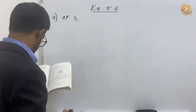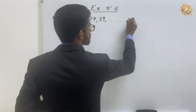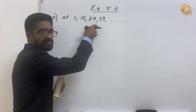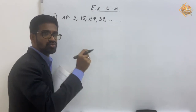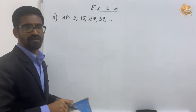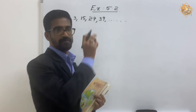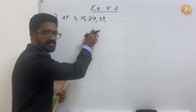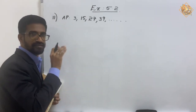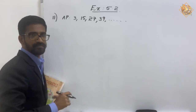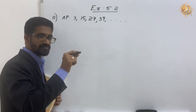The question is: which term of this AP will be 132 more than its 54th term? So first, what we have to do is find the 54th term of this AP. Then, along with the 54th term, we will add 132.